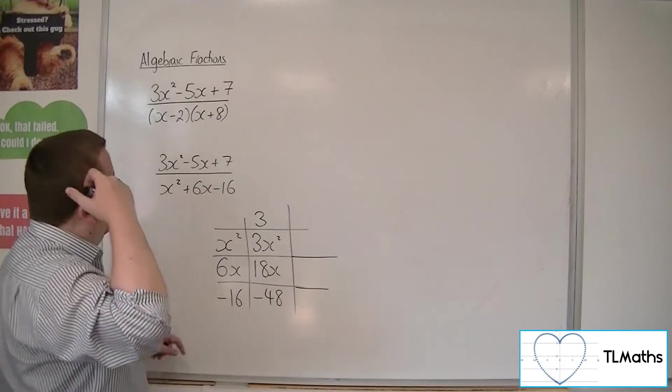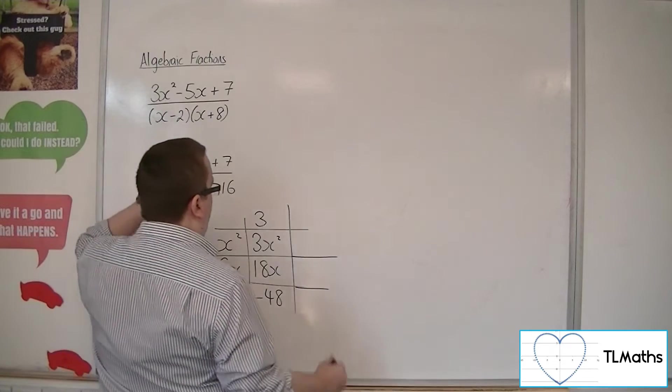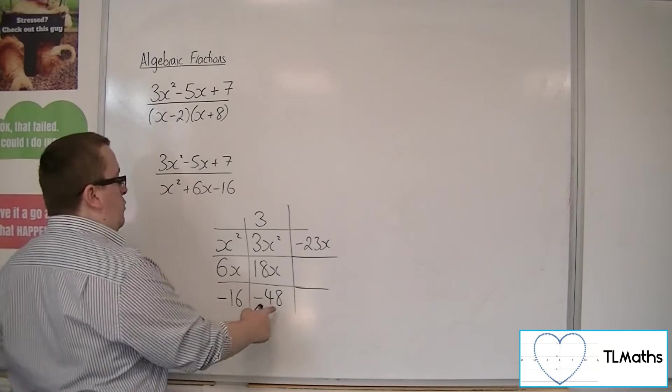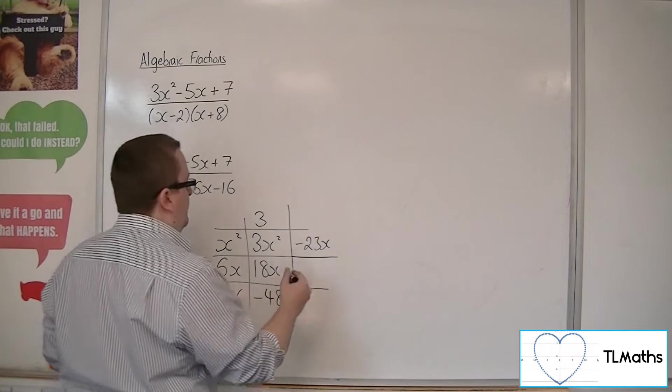So I don't want 18x, I want minus 5x, so I would have to take away 23x. And I don't want minus 48, I want 7, so I would have to add on 55.